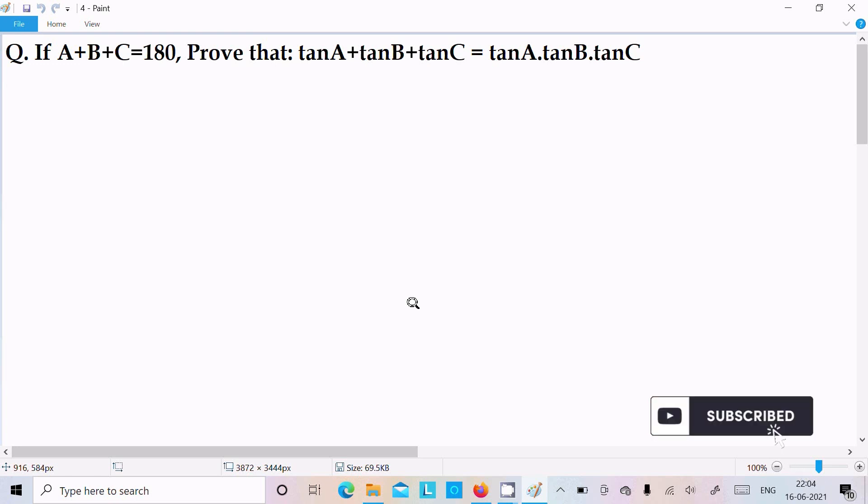In this video lecture, I am going to prove that tan A plus tan B plus tan C equals tan A times tan B times tan C, given A plus B plus C equals 180 degrees. Let's see the answer.